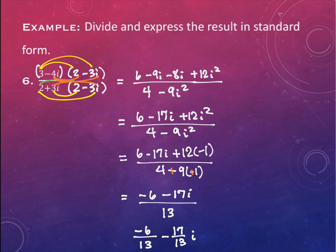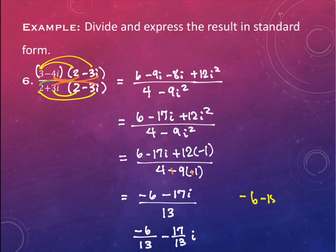It is worth noting that if any of these have the ability to reduce, you should reduce them. Like if this denominator had been a 12, then 6 over 12 would reduce. And if you had both pieces — let's say this had been negative 6 minus 18i over 12 — and we could reduce the 6, the 18, and the 12 all by 6, then we would do that too. So any reducing that we can do, we will reduce.